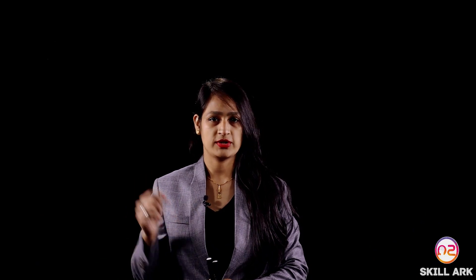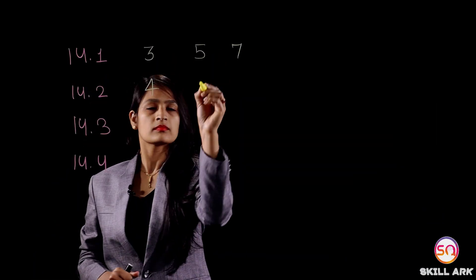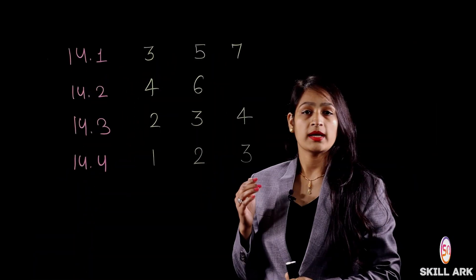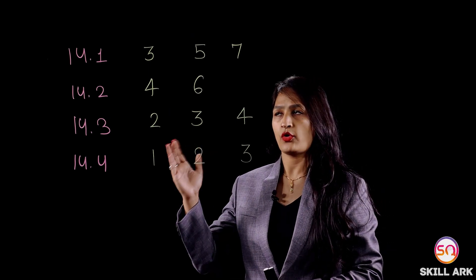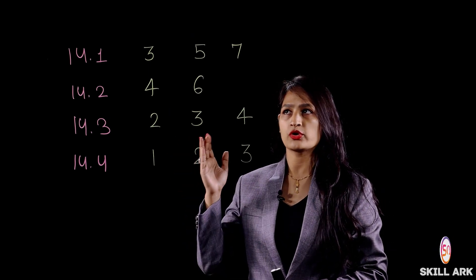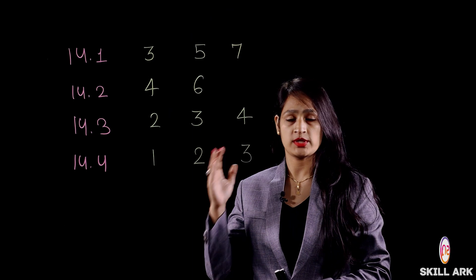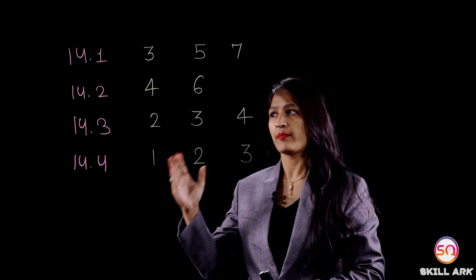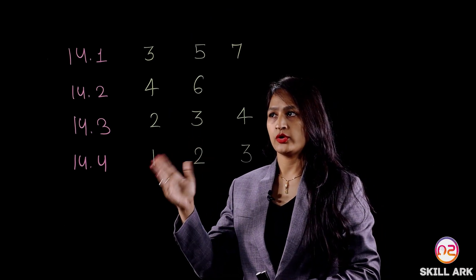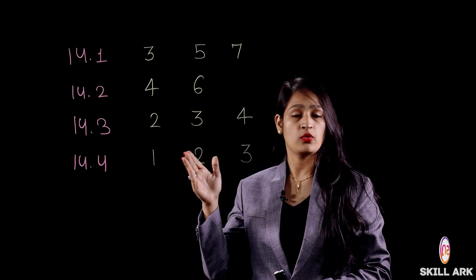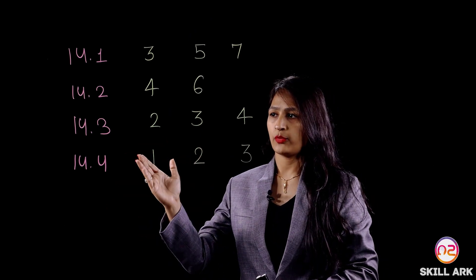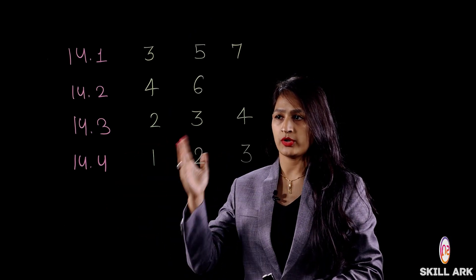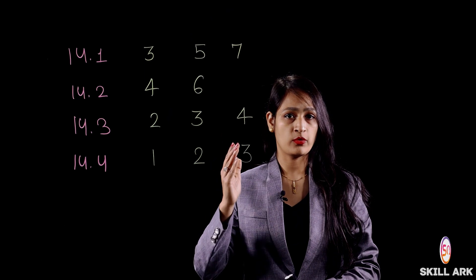Let's see the exercise-wise important questions. For Exercise 14.1, question number 3, question number 5, and question number 7 are important. Then Exercise 14.2 has question number 4 and question number 6 as important. In Exercise 14.3, question number 2, question number 3, and question number 4 are important.